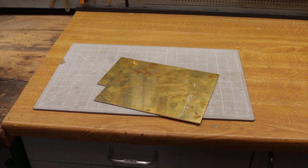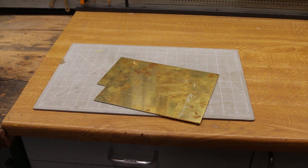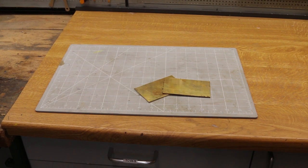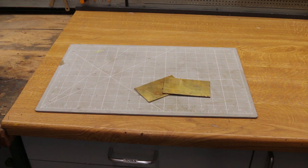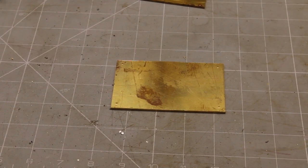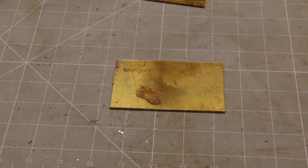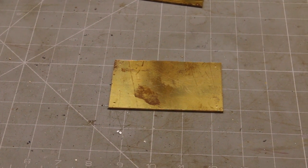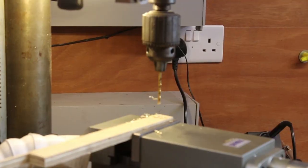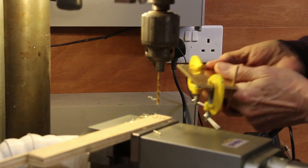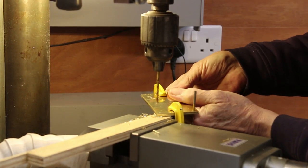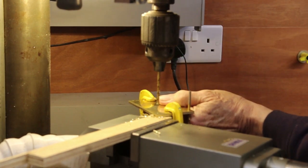The starting point was some two millimeter thick brass plate from which I cut two 100 by 60 millimeter slabs. One was marked out and center punched for the four mounting holes and the corners.